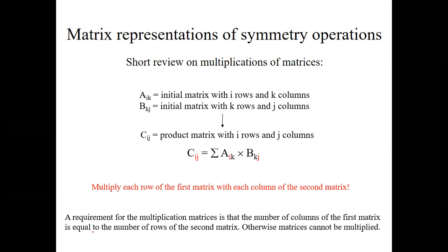When we multiply two matrices, we multiply each row of the first matrix with each column of the second matrix. This procedure only works under the condition that the number of columns in the first matrix equals the number of rows of the second matrix. Let's practice this with a few examples.